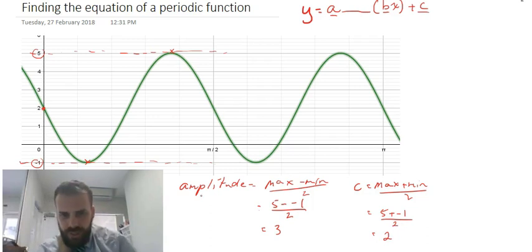So I've got an amplitude of 3, I've got a c value of 2. Now just ask yourself a question, what kind of curve is it?